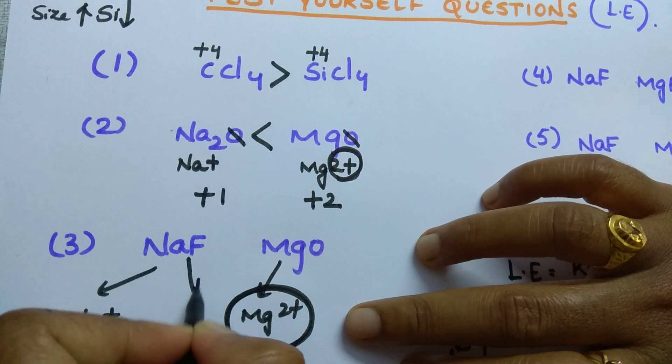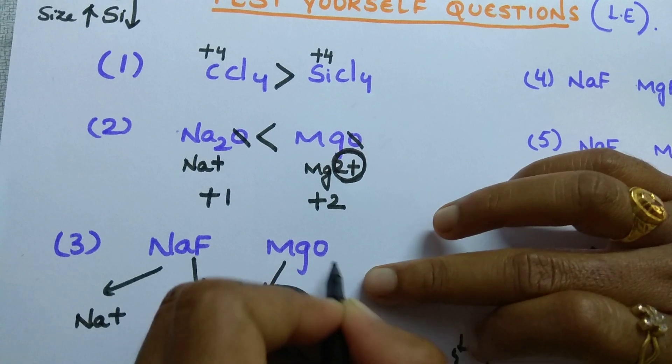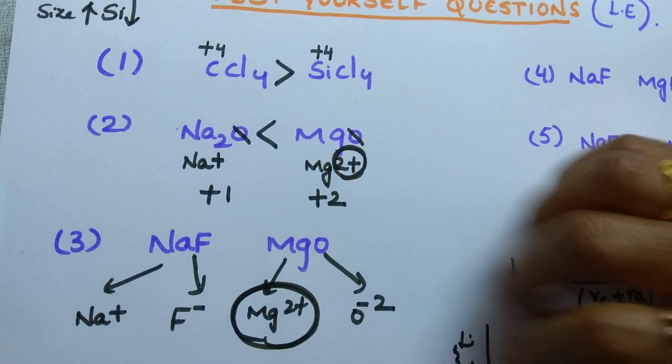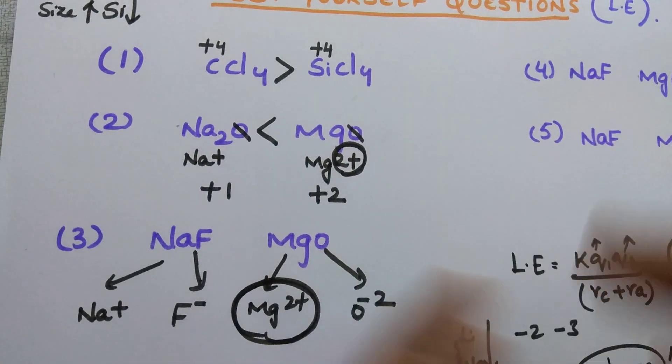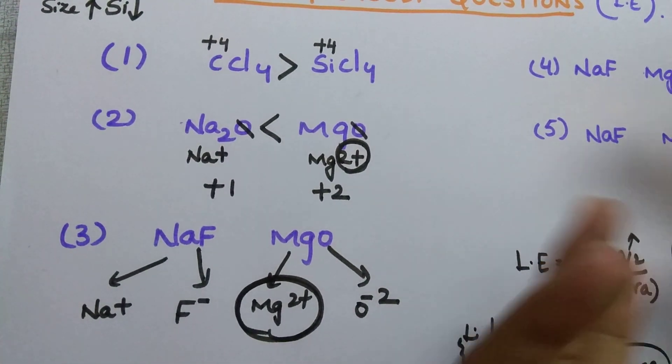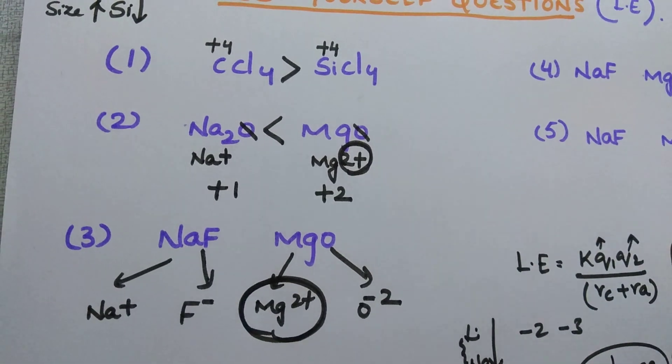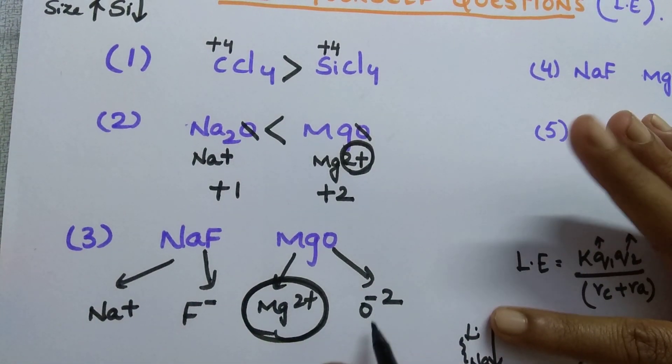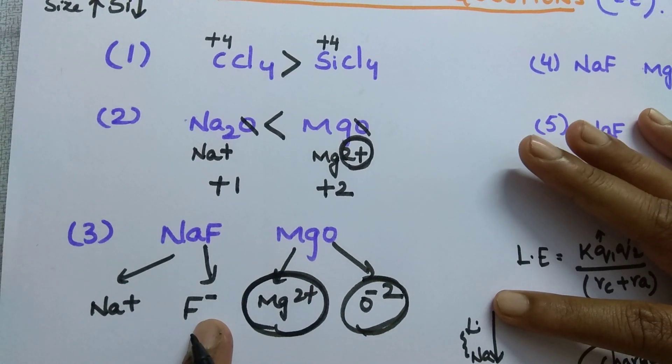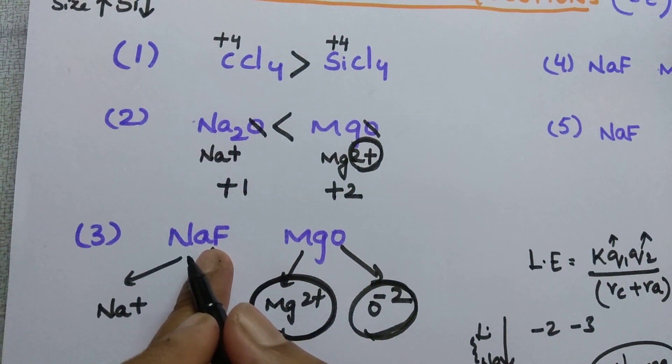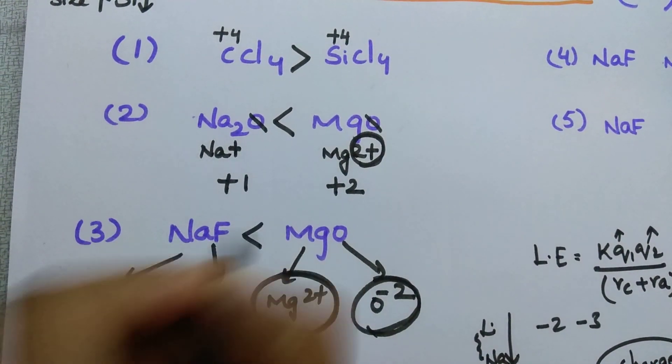And next one is here, F minus. And here, O minus 2. Tell me, which is having more charge? Because always charge is a dominating factor. So you can see based on the charge without any confusion. Here, it is having more charge, O minus 2 when compared to this anion. That is why, when compared to NaF, MgO is having higher lattice energy.